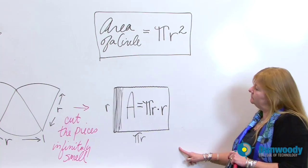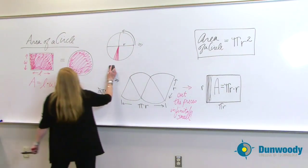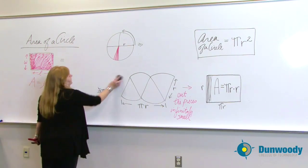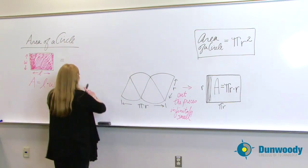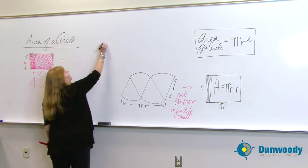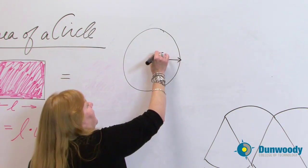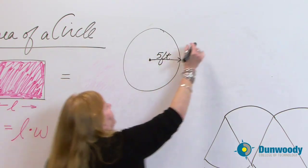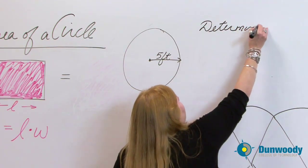And then I think we should work one of these problems. So let's do it. Let's determine the area of a circle. Now, the last circle that we worked on, we determined circumference. We had a radius of 5 feet. Let's determine the area.